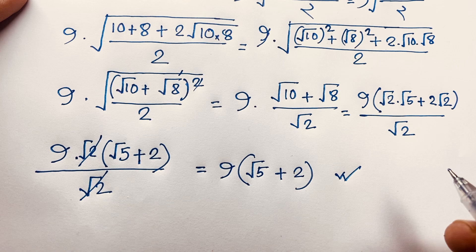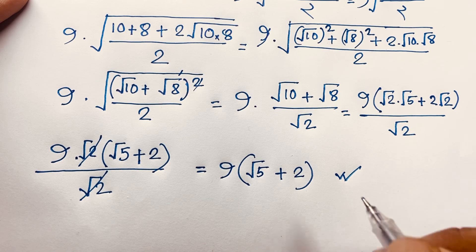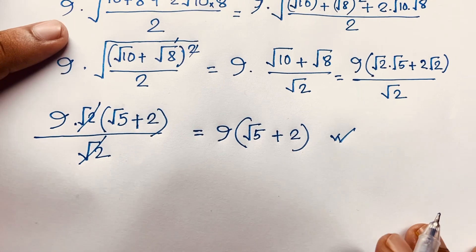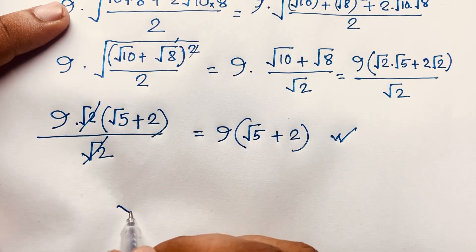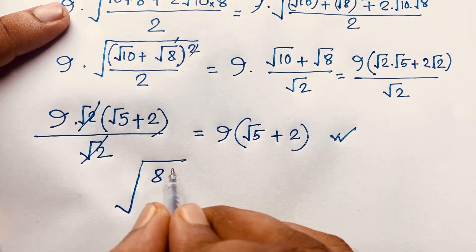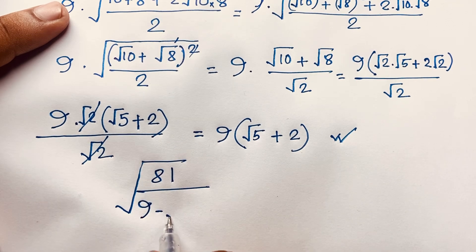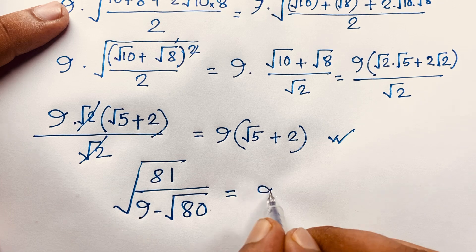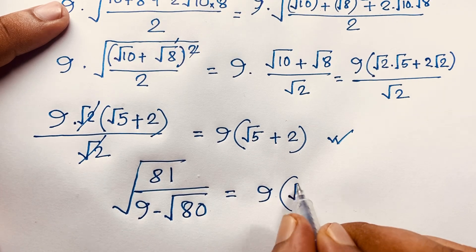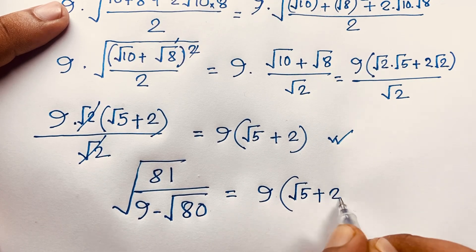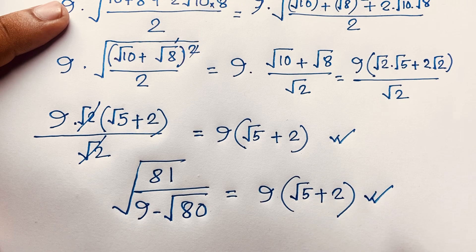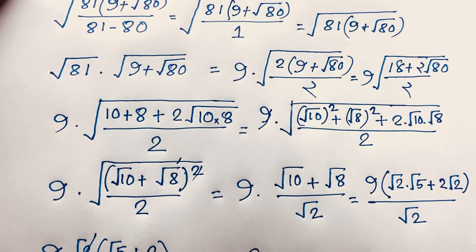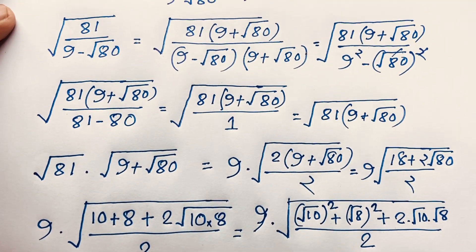This is our final answer for this square root Math Olympiad equation. So square root of 81 over (9 minus square root 80) equals 9 times (square root 5 plus 2). This is our final answer for this viral Math Olympiad question. Thank you all — if you enjoyed this video, please watch our channel for more interesting videos.